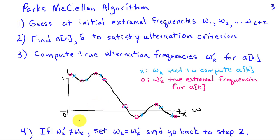If indeed they are different, then we're going to use the new ones as new guesses for alternation frequencies and go back to step two. And then we'll iterate this process until the alternation frequencies don't change.